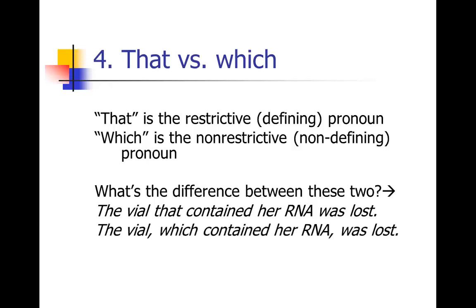Compare that with the following sentence. The vial, which contained her RNA, was lost. In that sentence there's only one vial in question. We know, everybody knows what vial we're talking about, and what follows the which is just some extra information that the vial, which happened to contain her RNA, that's non-essential information set off by commas, was lost. So there's only one vial in question in that sentence.